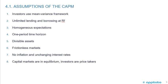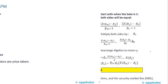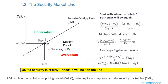Remember, this is academic theory, so there are assumptions that are made in theories. This LOS has explained the Capital Asset Pricing Model, CAPM, including its assumptions, which we've done, and the security market line. So now we're moving to the security market line.